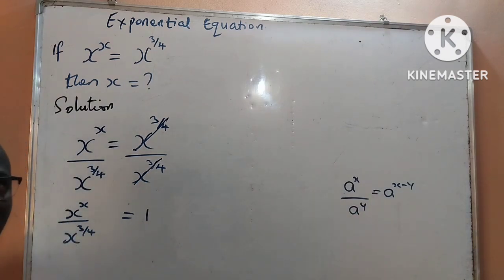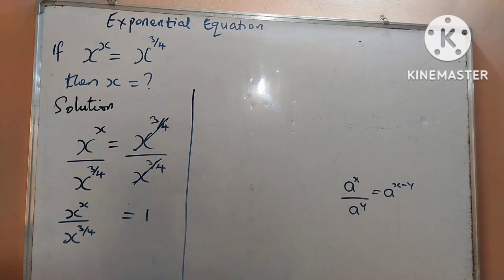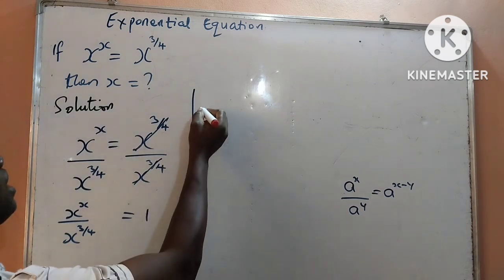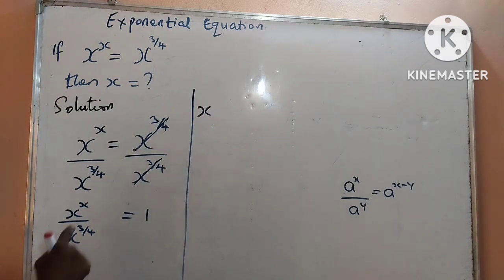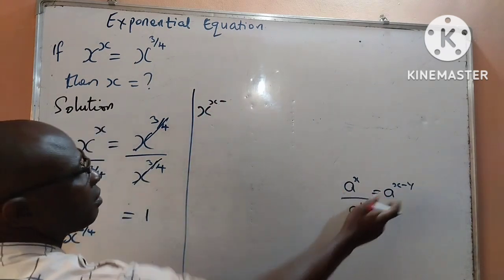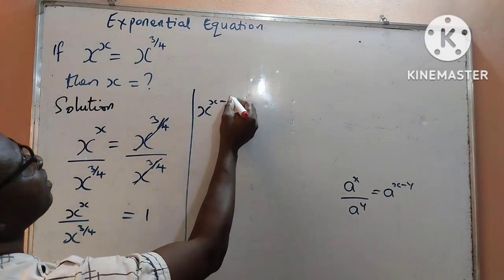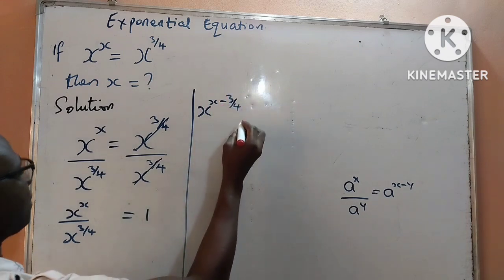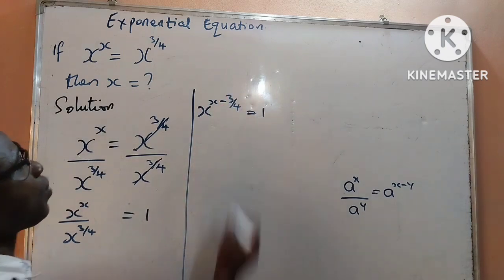I will apply the indices law to the left hand side here. You can see that the bases are the same — the base at the numerator is x and the base at the denominator is x. Therefore, I am going to write this as x to the power of x minus 3 over 4, and this is equal to 1.